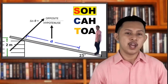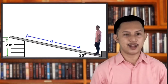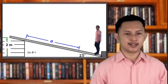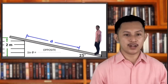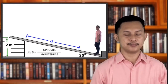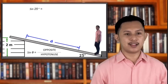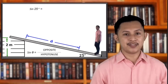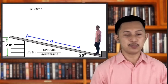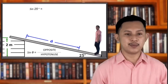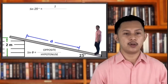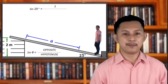Now, let's try to solve using the sine ratio. Using the sine ratio, we have sine theta, or the sine of the angle, is equal to opposite over hypotenuse. Substituting the values — 25 degrees for the angle and 2 meters for the opposite side — sine 25 degrees is equal to 2 over the unknown hypotenuse, represented by the variable D.